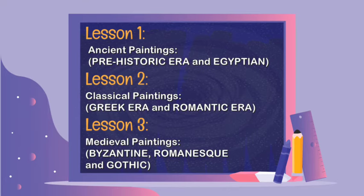This module is divided into three lessons. Lesson 1 is about ancient paintings — prehistoric era and Egyptian. Lesson 2 is about classical paintings — Greek era and Romantic era. And Lesson 3 is about medieval paintings — Byzantine, Romanesque, and Gothic.